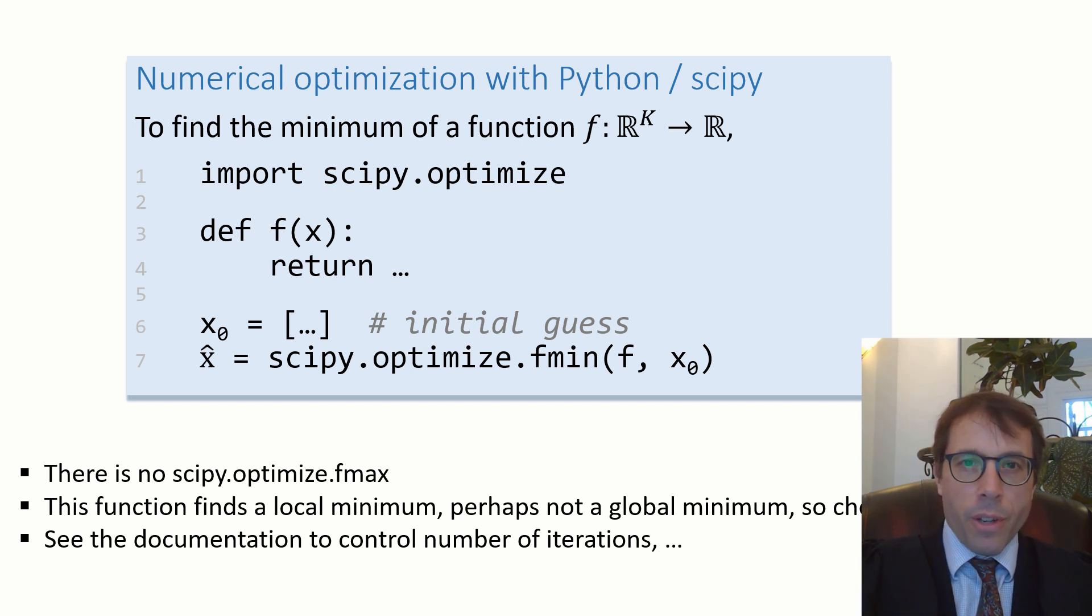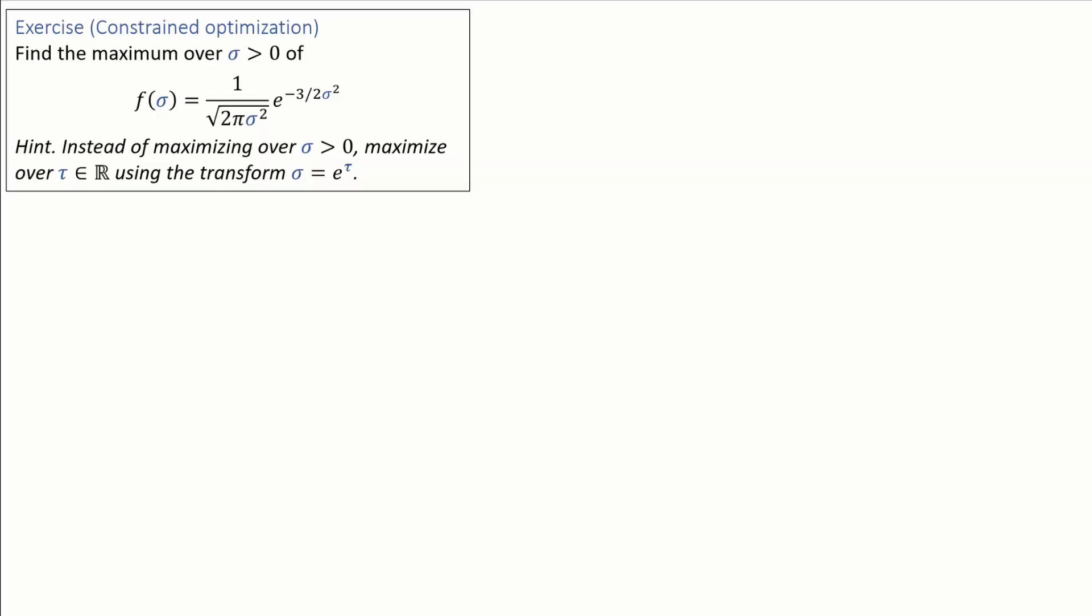In machine learning, we often want to find an optimum over a constrained domain, for example over x greater than or equal to zero, like in this next example. Find the maximum over sigma above zero of f(sigma) equals blah blah blah.